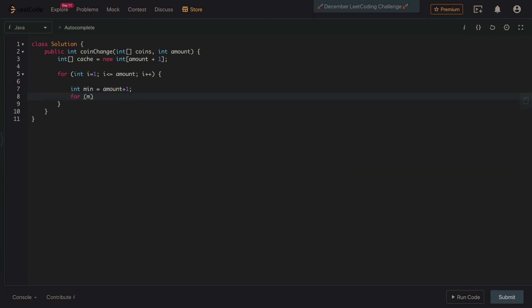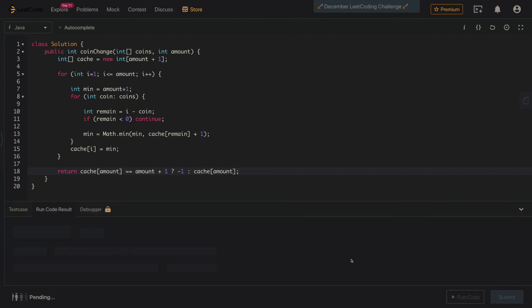Next we need to iterate over each of the coins and we need to make sure our remainder is not less than zero. If it is not, we're going to see if we can update our min by comparing and picking the smaller amount in our cache. And finally, before we return, we need to make sure that our answer is not equal to amount plus one. This is the case where there is no answer and we need to return negative one back.